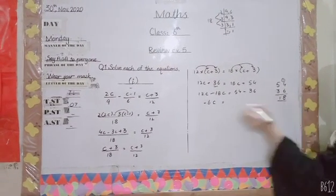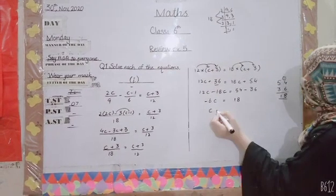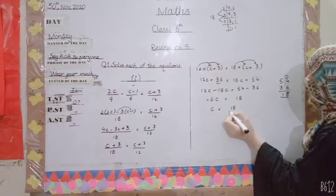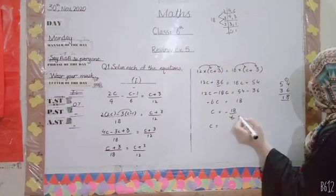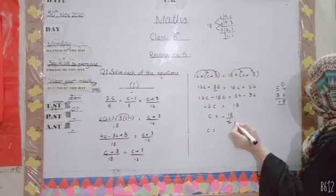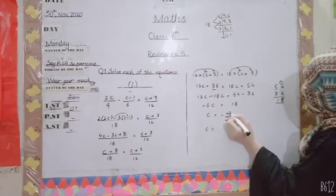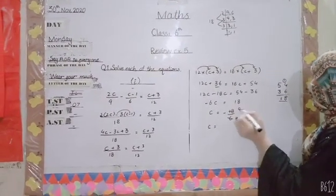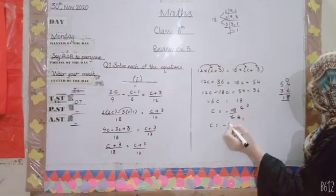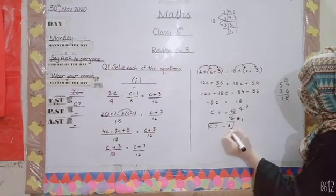So negative 6c equals 18. Therefore c equals 18 divided by negative 6. Using division: 2 threes are 6, 2 nines are 18, 3 threes are 9. Our answer is c equals negative 3.